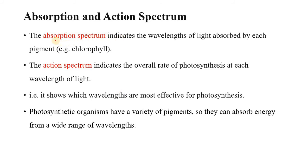What is absorption spectrum? Absorption spectrum indicates the wavelengths of light absorbed by each pigment. As we know that photosynthesis occurs in the visible spectrum of light, but not all wavelengths are absorbed by photosynthetic pigments. Only a few specific wavelengths are absorbed by photosynthetic pigments like chlorophyll and carotenoids. The visible range from which light is absorbed is called the absorption spectrum.